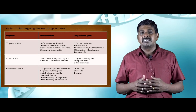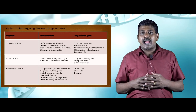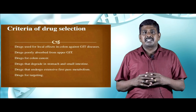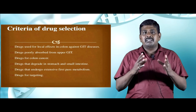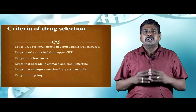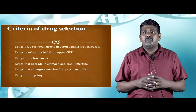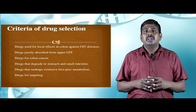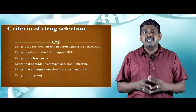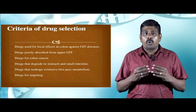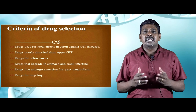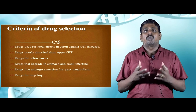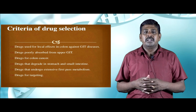For systemic action, the disease conditions addressed include prevention of gastric irritation, prevention of first-pass metabolism of orally ingested drugs, and oral delivery of peptides and vaccines. The drug examples include non-steroidal anti-inflammatory drugs, steroids, and insulin. To summarize, the important criteria for drug selection are: drugs for local effects in the colon, drugs poorly absorbed from the upper GI tract, drugs for colon cancer, drugs that degrade in the stomach and small intestine, drugs undergoing extensive first-pass metabolism, and drugs for targeting.